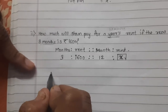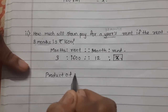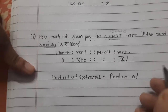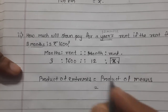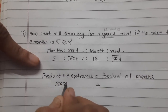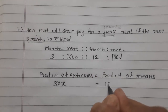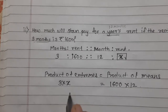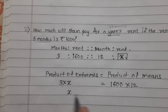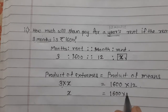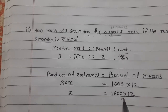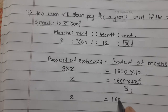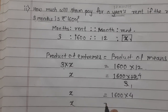Product of extremes is equal to product of means. The extremes are 3 and x; the means are 1600 and 12. So 3x = 1600 × 12. Now 3 is multiplied; transferring gives x = 1600 × 12 ÷ 3. Simplifying: 12 ÷ 3 = 4, so x = 1600 × 4.